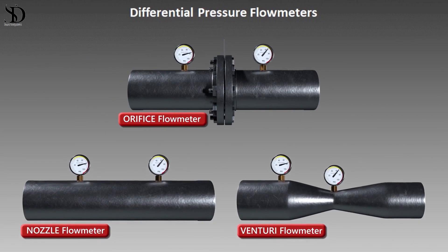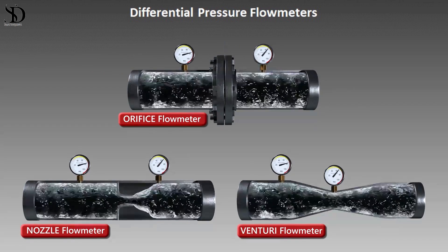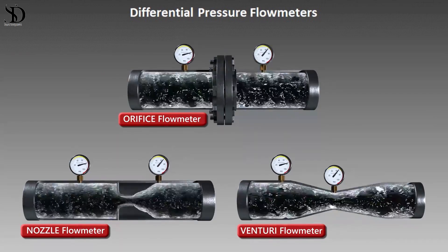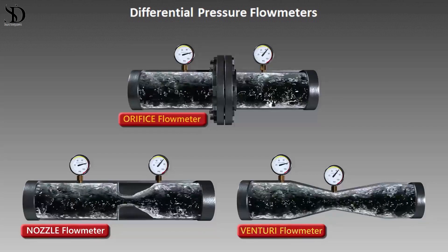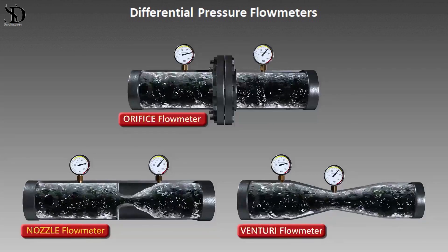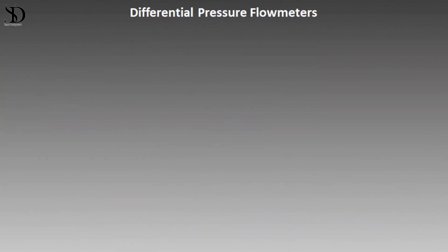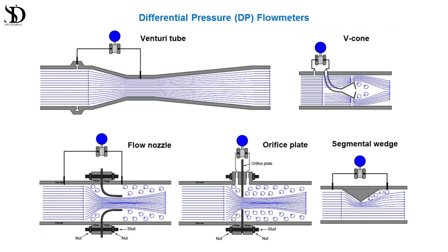Differential pressure flow meters: an overview. Differential pressure (DP) flow meters are indispensable instruments utilized in various industries for measuring the flow rate of fluids in pipelines. These devices operate on the principle of inducing a pressure drop across a constriction in the flow path and correlating it with the flow rate.